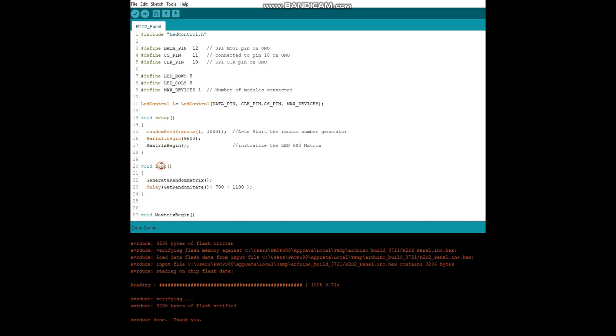Next our main loop. This goes on and on forever. We generate the random matrix. This lights up the dots or the LEDs on the matrix randomly. And then I put a delay. I even do a generate a random state of the delay. So it can actually every single time it goes to the loop it'll actually delay a random number too. So it'll always be different. So this entire thing is random.